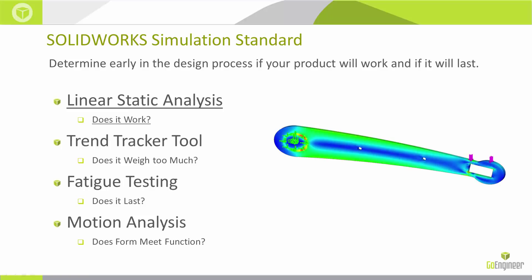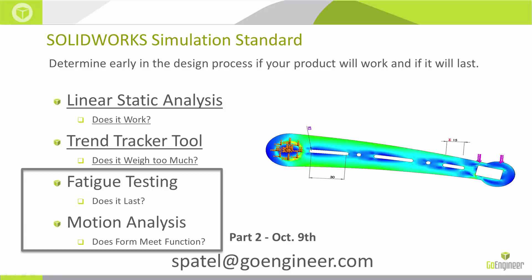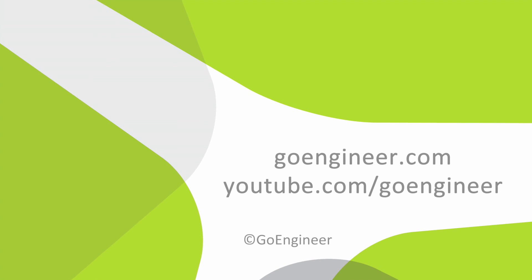To summarize: we ran linear static analysis to verify the arm works under load, then used the trend tracker to optimize the design. The remaining topics — fatigue testing to determine how many cycles the arm can handle, and motion analysis to add motors to the full assembly, see it move, and size motors for the desired speed — will be covered on October 9th. For any questions, email spatel@goengineer.com. Thanks for attending the webinar — see you next time.